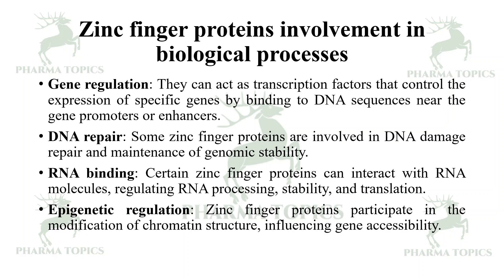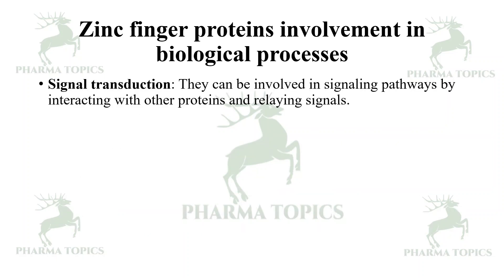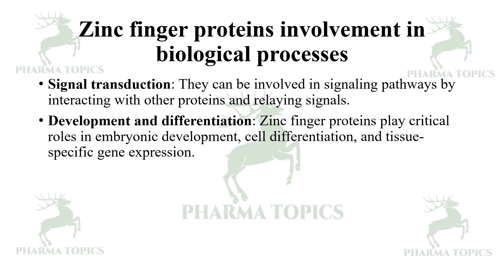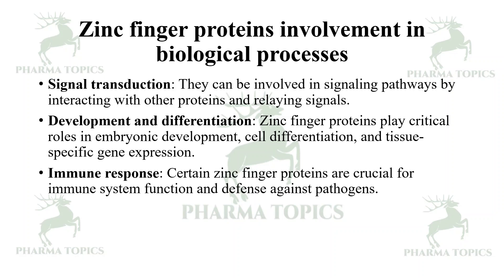Some zinc finger proteins are involved in epigenetic regulation, participating in the modification of chromatin structure and influencing gene accessibility. Some are involved in signal transduction by interacting with other proteins and relaying signals. They also play critical roles in development and differentiation, including embryonic development, cell differentiation, and tissue-specific gene expression. Certain zinc finger proteins also play a critical role in immune system function and defense against pathogens.